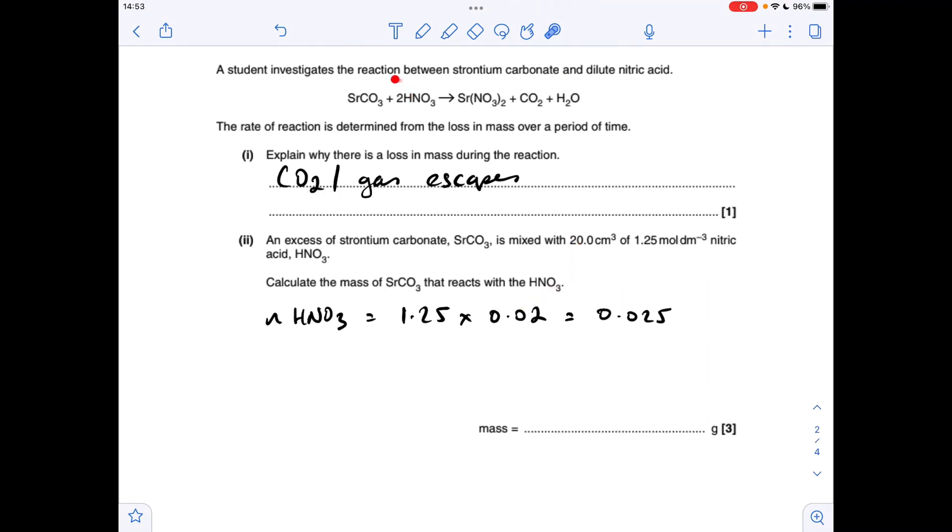Next thing we do is apply the ratio to find out the moles of strontium carbonate that's reacted, so it's going to be half as many. All we need to do now is turn the moles into grams, so we multiply by the MR of strontium carbonate, which is 147.6. Gives an answer of 1.85 grams.